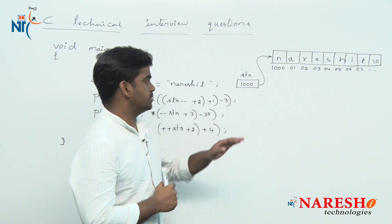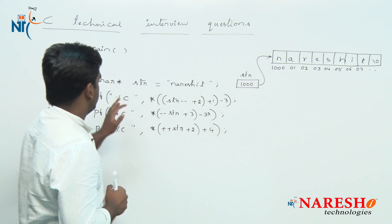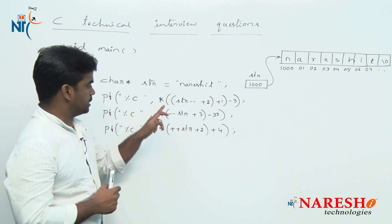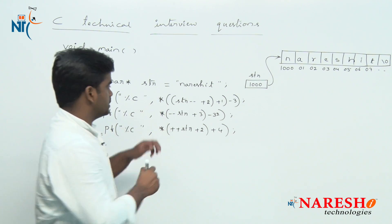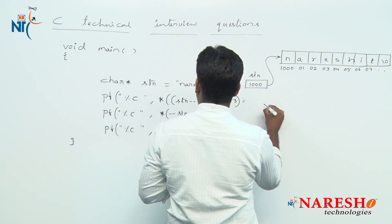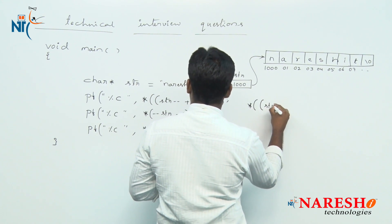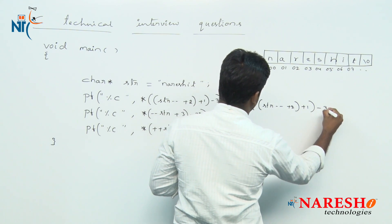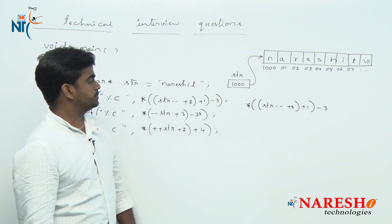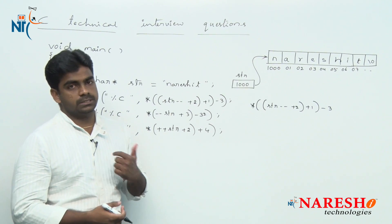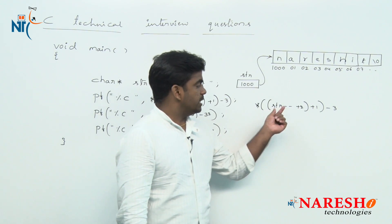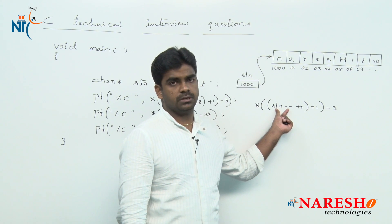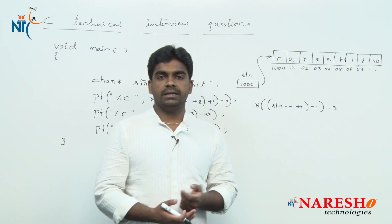Now we are executing the instructions one by one. The first expression is: pointer str with post-decrement, minus-minus, plus 2, plus 1, minus 3. Parentheses have the highest priority. Here we have post-decrement and post-increment, pre-decrement operators to consider.